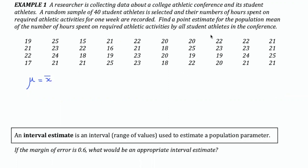The sample mean means taking all of these pieces of data, adding them up — summing up all the x values — and dividing by the number of pieces of data, or the sample size, which is definitely going to be 40. There are 40 numbers on the list. If you take the time to add up all of these, you should get 842, which gives us a population mean of 21.1 hours.